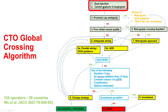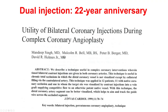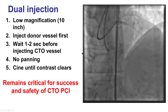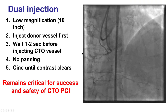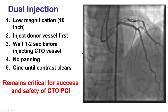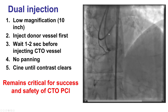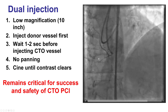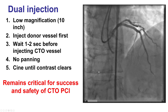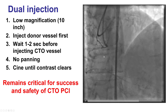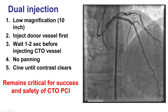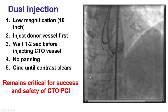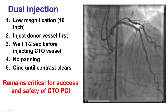Step one is dual injection and careful review of the angiogram — probably the two most important steps in trying to cross CTOs. Dual injection is performed by first injecting the CTO donor vessel, waiting a couple of seconds, then injecting the actual CTO vessel. Low magnification is used so that no panning is needed, and we wait until the contrast completely clears. This helps us understand the proximal cap, the length of the occlusion, the quality of the distal vessel, and the presence of collaterals.